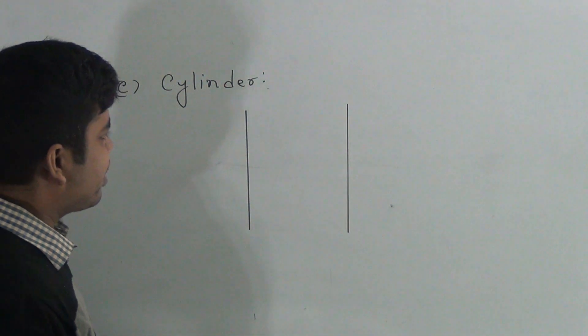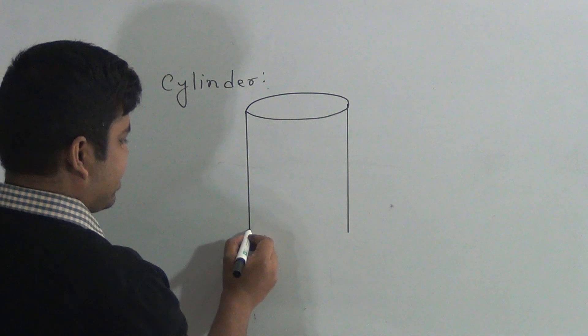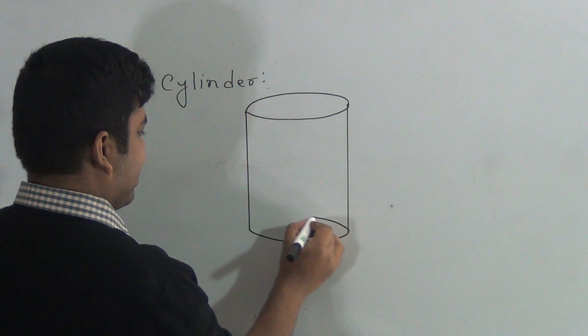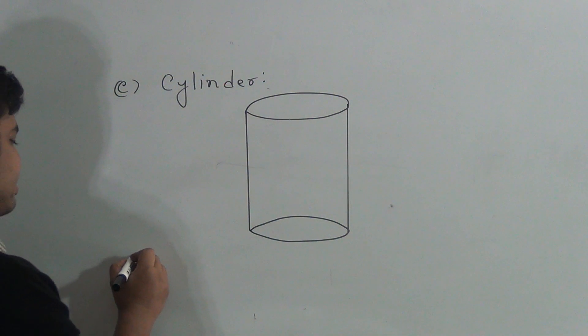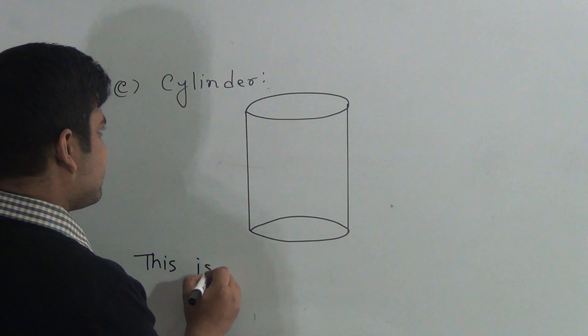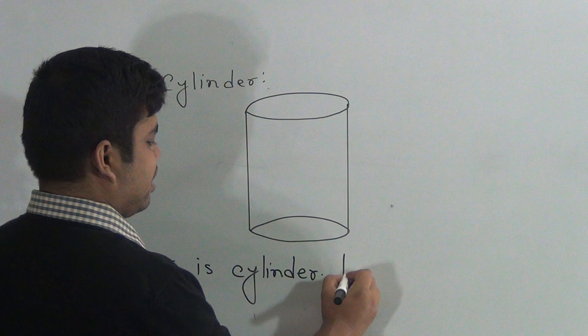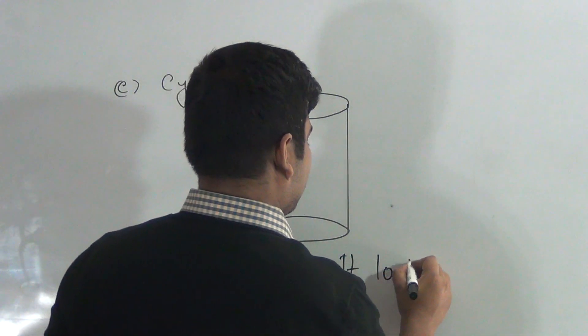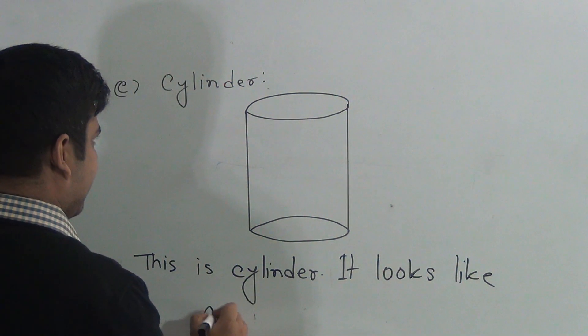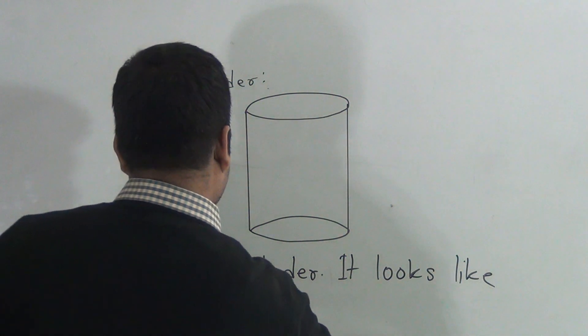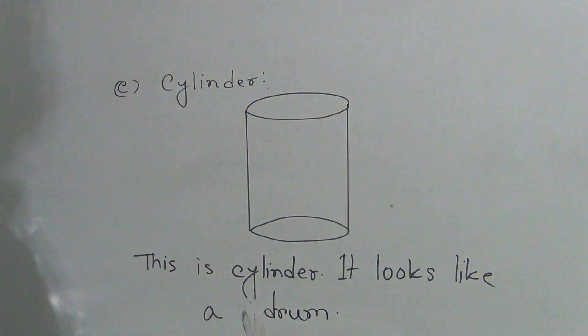Now I draw here a circular line. And this is called cylinder. This is called cylinder. So write here. This is cylinder. It looks like a drum. It looks like a drum.